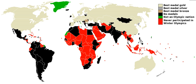After the 2018 Winter Olympics in Pyeongchang, 71 of the current 206 National Olympic Committees have yet to win an Olympic medal. Seven historic National Olympic Committees and the Refugee Olympic Team are also included in this list.